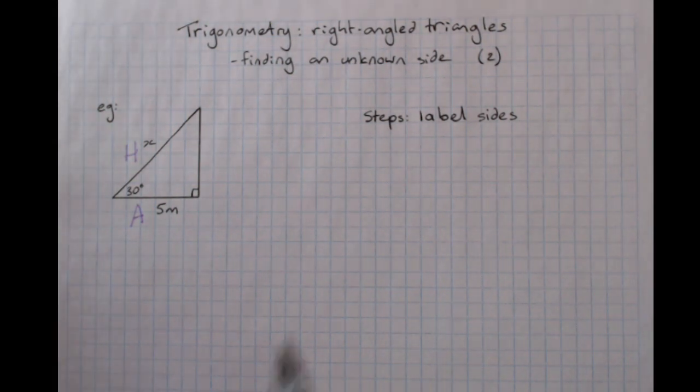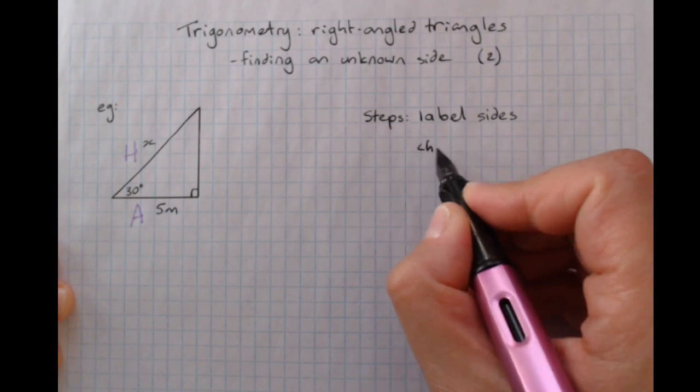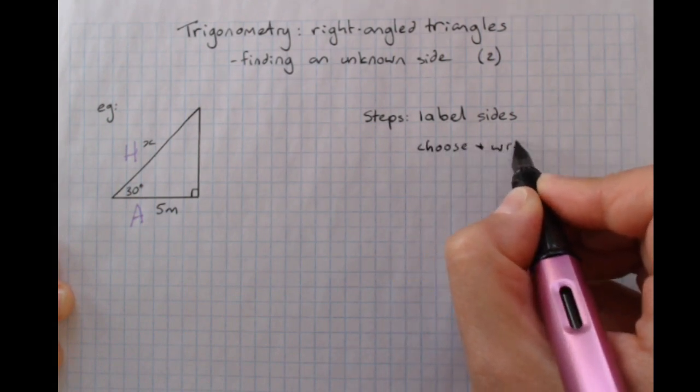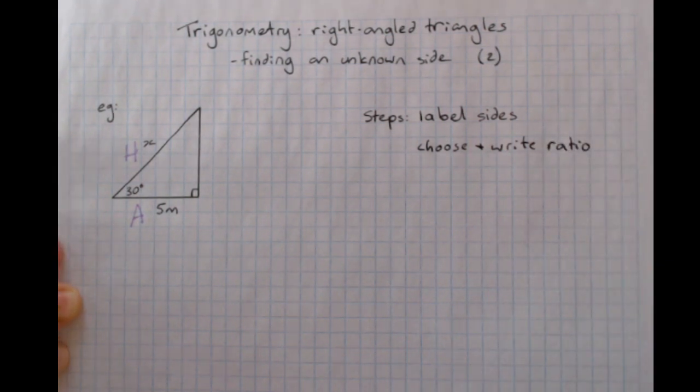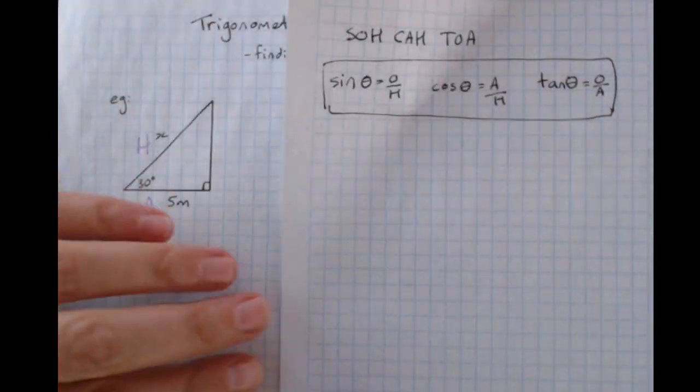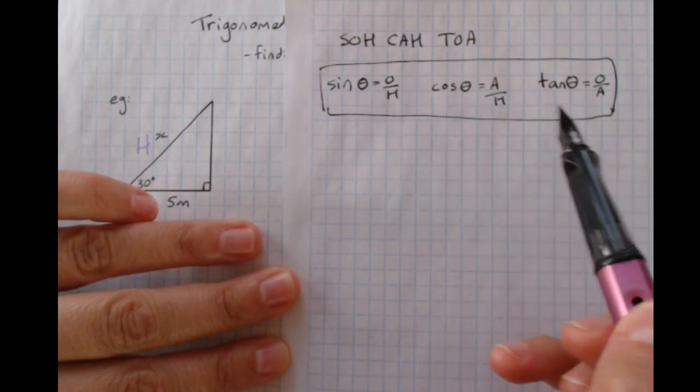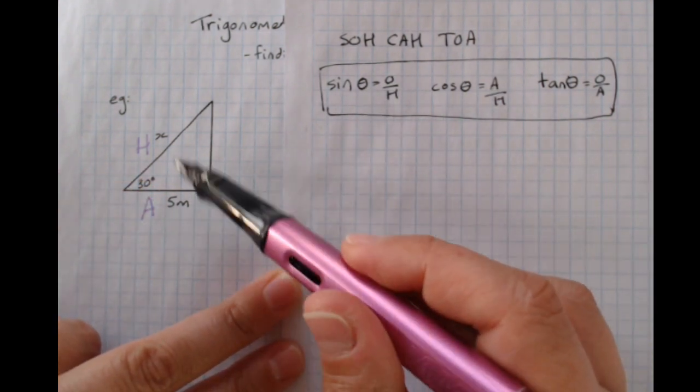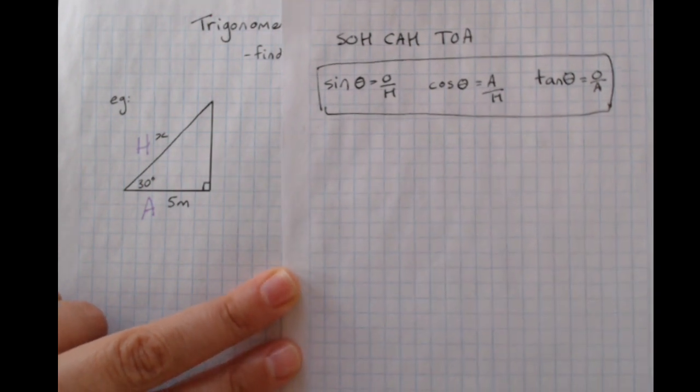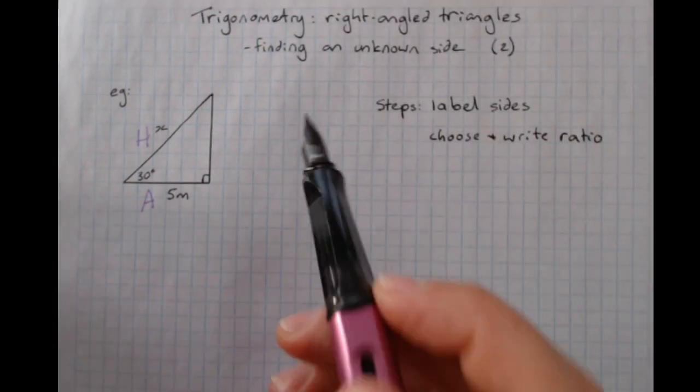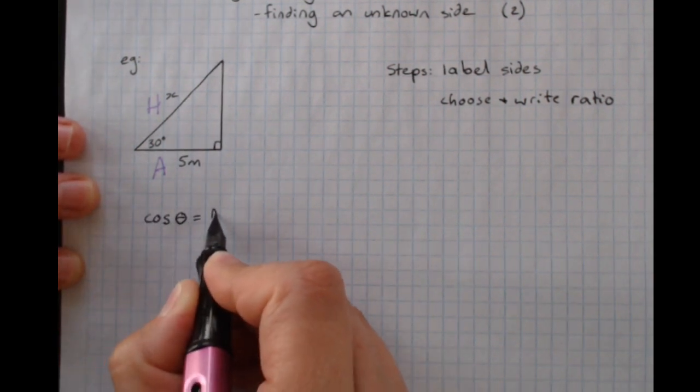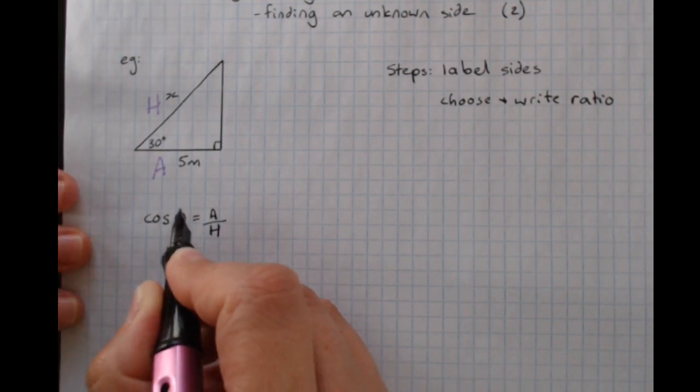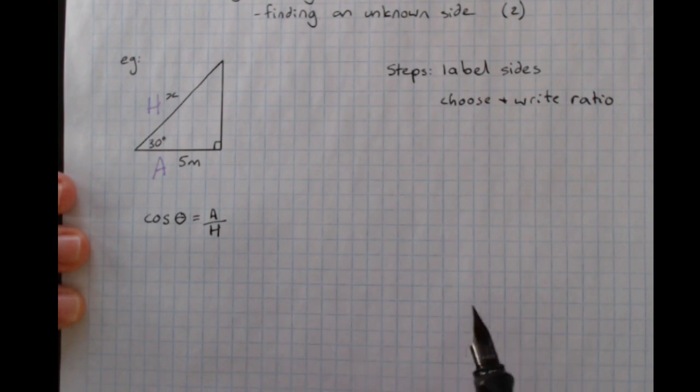Next step in any trig problem is always choose and write the ratio. You'll remember SOHCAHTOA. SOHCAHTOA helps us remember the three ratios. We want the ratio that has A and H that will be cos. So we write the ratio correctly cos θ equals A over H. You must remember to include the angle in your ratio formula.